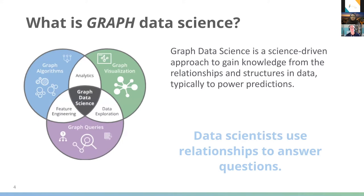So what does putting the graph in front of data science mean? A lot of it stays the same, but it adds some extra things. Rather than using data in a generic term to answer questions, we're asking questions that can be answered by using relationships. Instead of combining stats and machine learning, now we've got graph queries, graph algorithms, and graph visualizations all combining together — and the problems we're answering are ones where the structure of how data is linked together is useful.